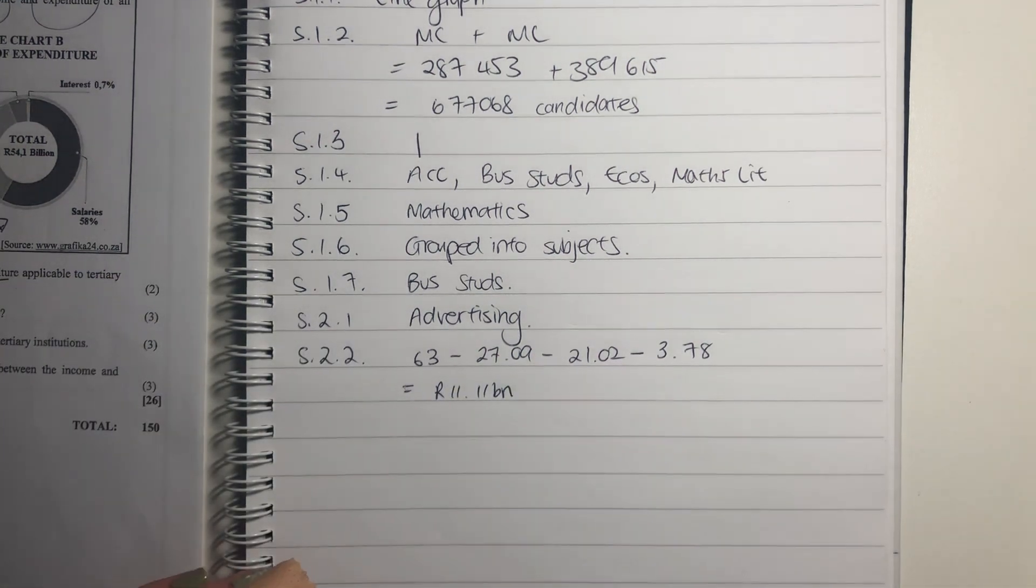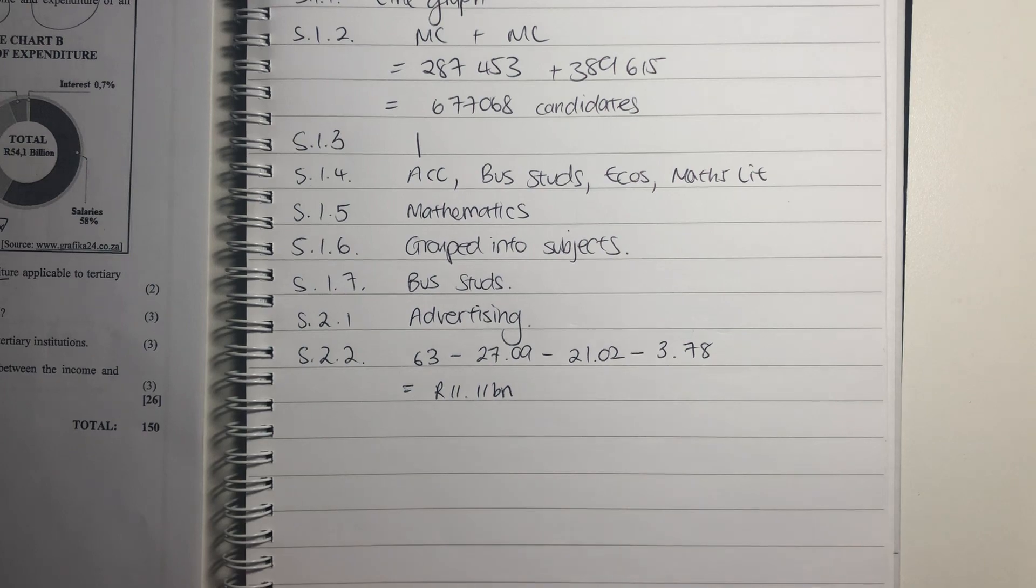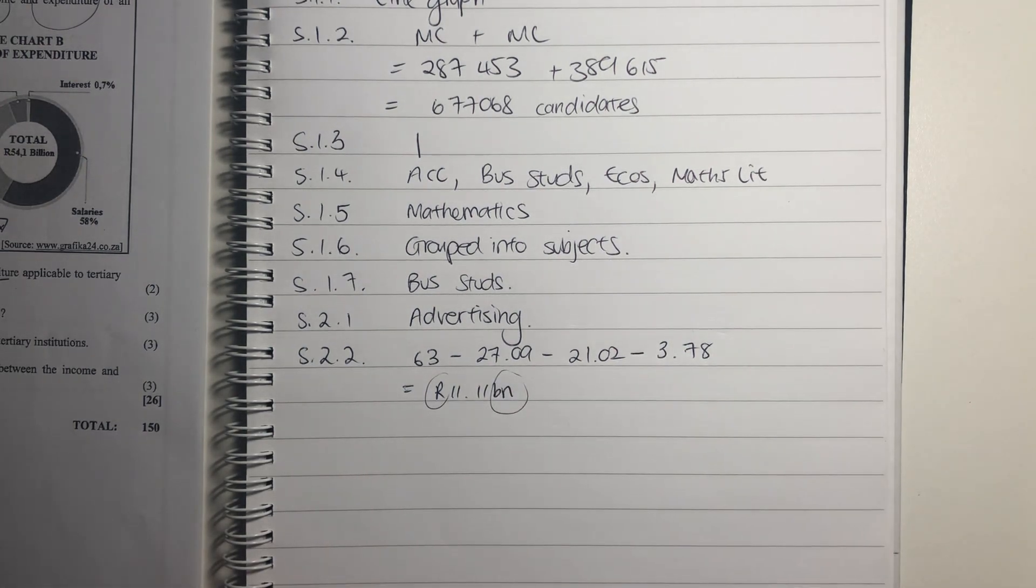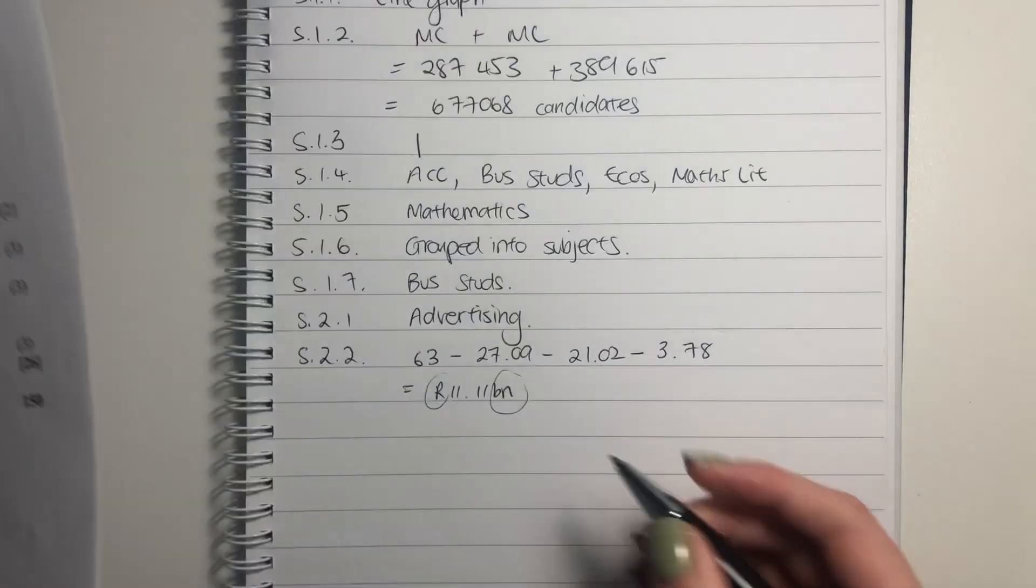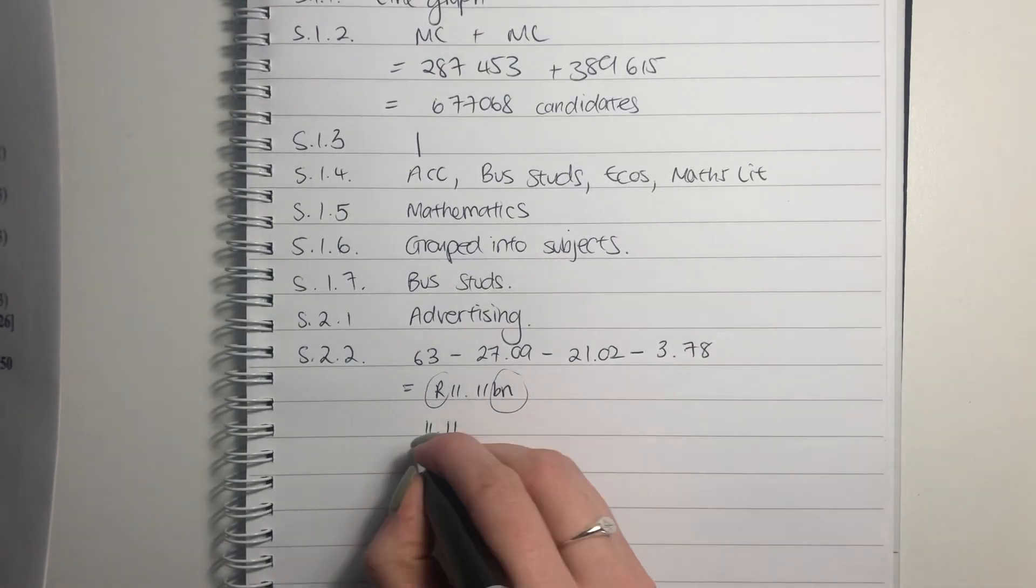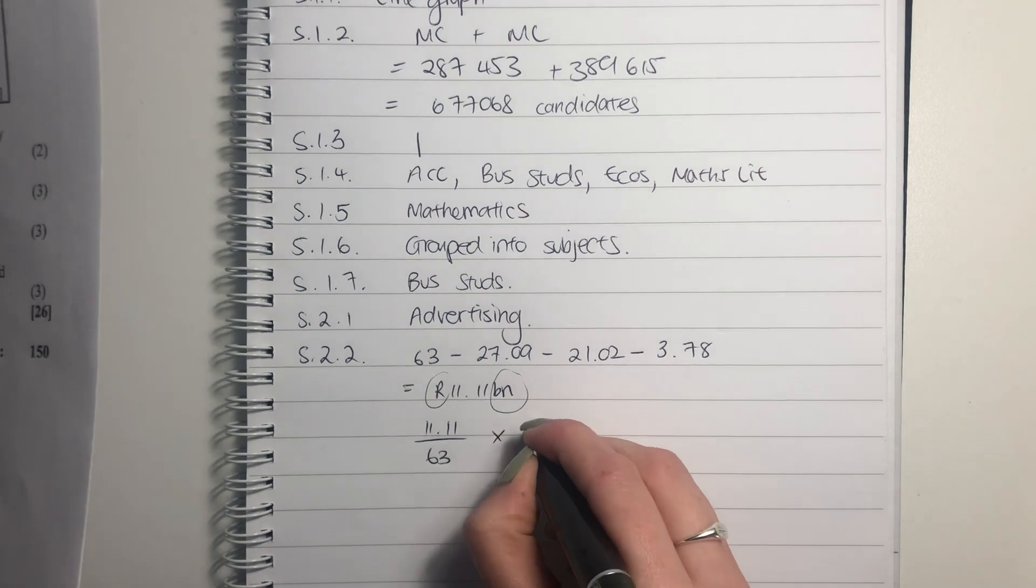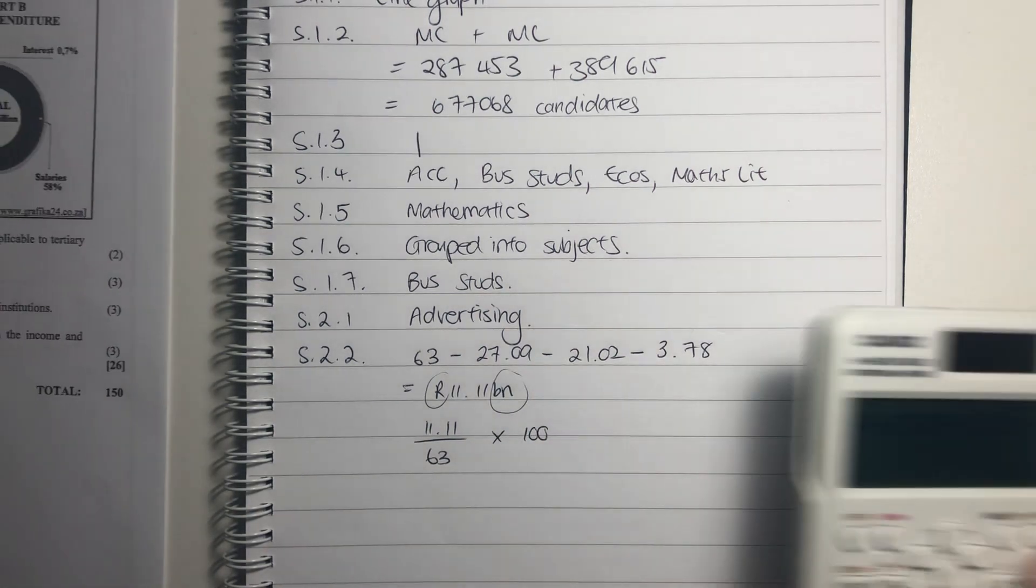So they're going to get 11.11 billion rand. Now, what's important here? You can't just write 11.11. You have to write billion, and you have to write rand. So make sure that you include your units. I know I haven't spoken about that too much in the past couple of videos, but please don't forget that. But it didn't just ask for the amount that was donations. It said the percentage.